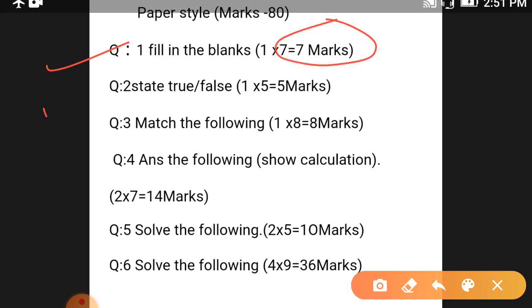Question number 2: State true or false. That is of 5 marks. It means total 5 questions will be there for true or false. You have to write only the correct answer, true or false. Per correct answer you will get 1 mark.